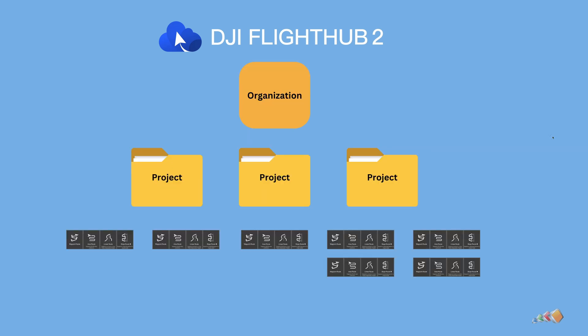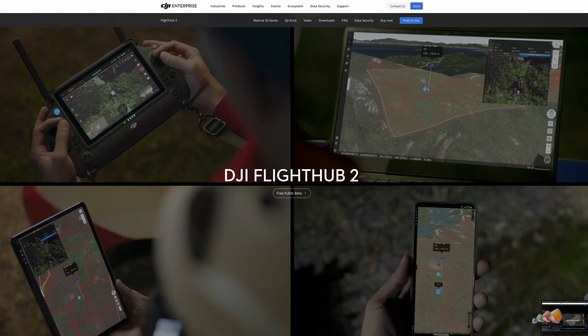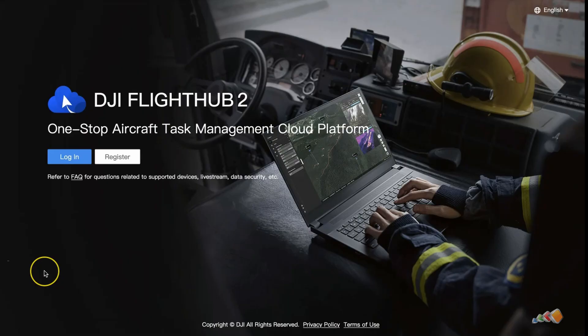I'll take you through how to create each of these and then run them in the field. FlightHub 2 can do a lot more than that, but for today's video I'm only going to cover how to create flight routes and then access them from your controller. So let's get to it.